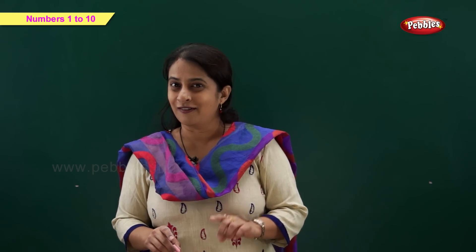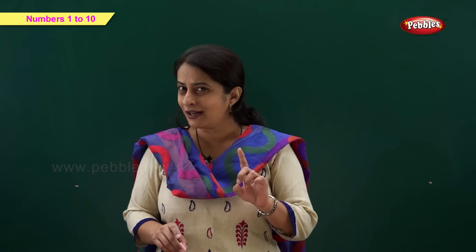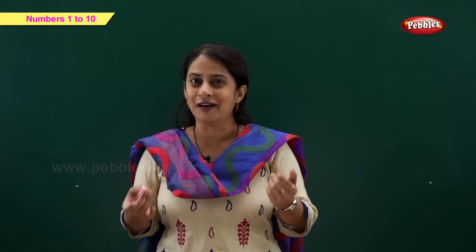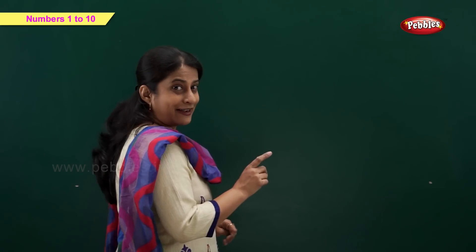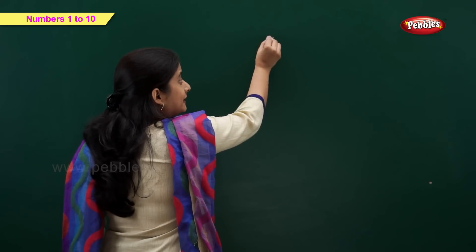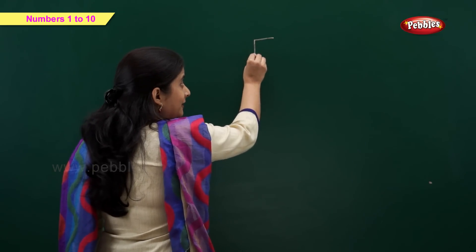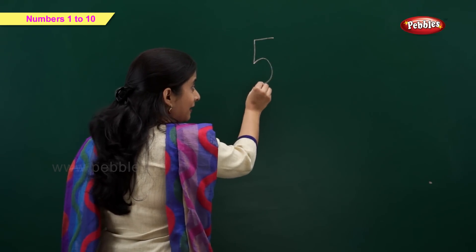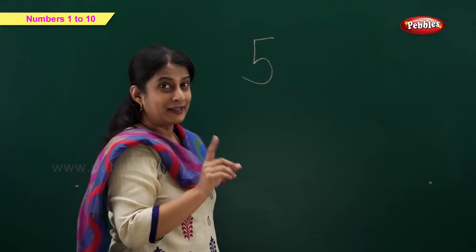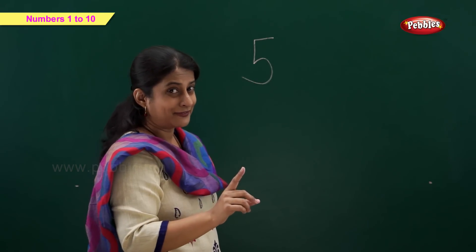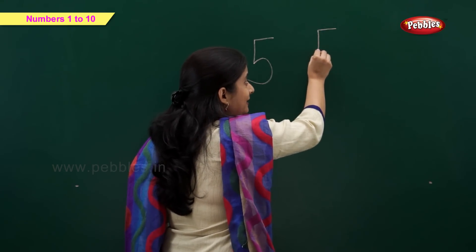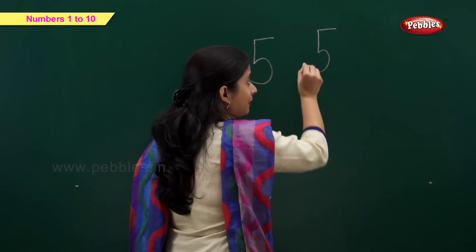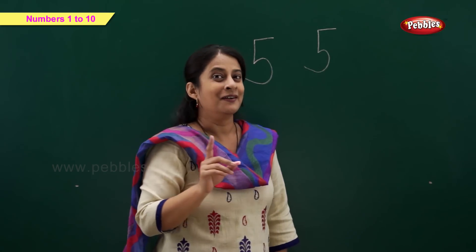So friends, now you tell me, which number comes after 4? Number 5. That's correct. So let's write number 5. 1 sleeping line, 1 standing line and a curve makes number 5.